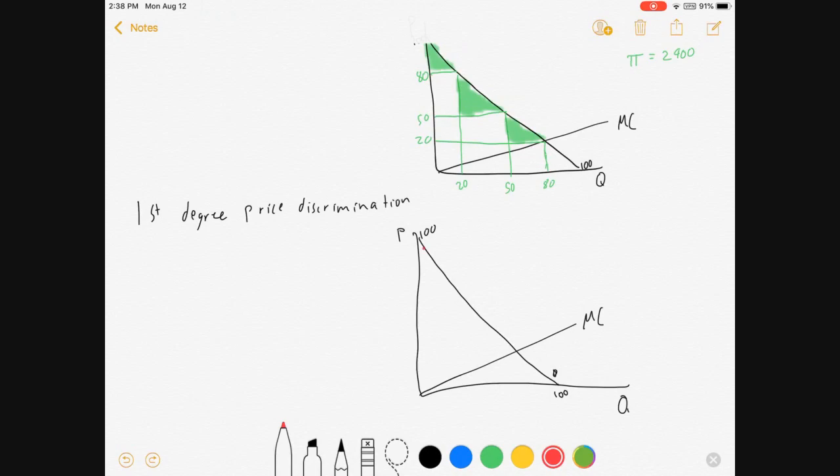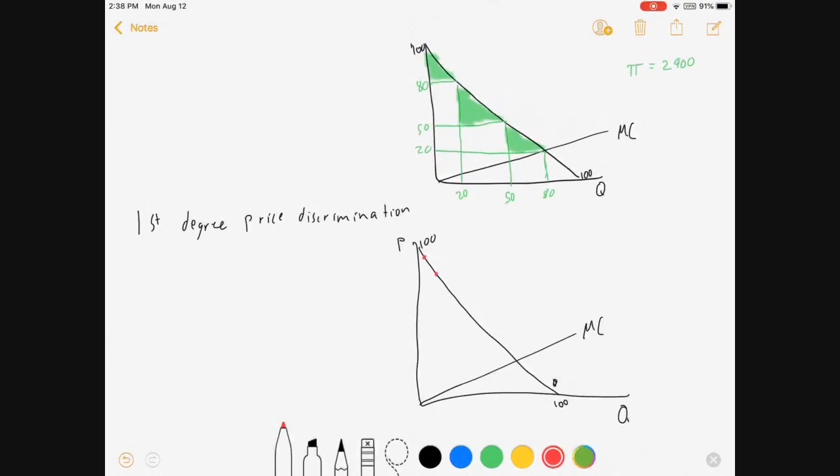If we have a consumer here willing to pay $99, they will pay $99. If we have a consumer here willing to pay $97, they will pay $97. Every single quantity will be linked to its maximum willingness to pay. By doing that, our price ends up being exactly on top of the demand curve, where that's our price function.